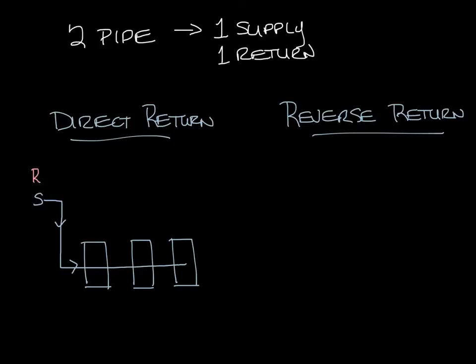In a direct return system the return takes the shortest path back. So from this last unit it would go all the way through there and the second and the first would be here. So now what you can see, let's label these 1, 2, 3.